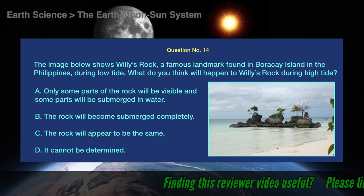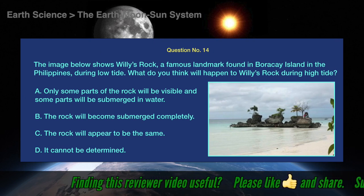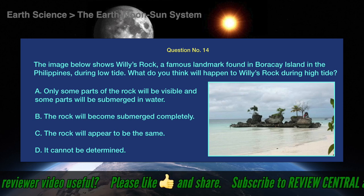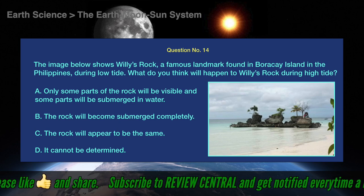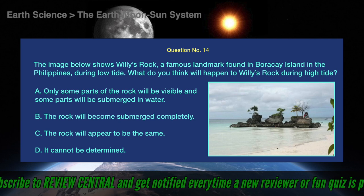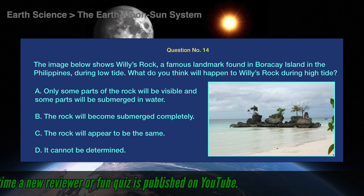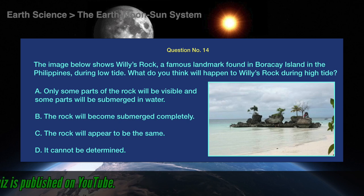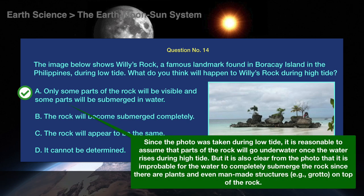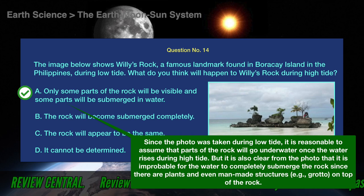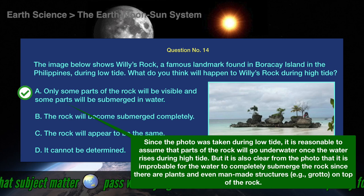Question number 14. The image below shows Willey's Rock, a famous landmark found in Boracay Island in the Philippines, during low tide. What do you think will happen to Willey's Rock during high tide? A. Only some parts of the rock will be visible and some parts will be submerged in water. B. The rock will appear to be the same. C. The rock will become submerged completely. D. It cannot be determined. The correct answer is A. Only some parts of the rock will be visible and some parts will be submerged in water. Since the photo was taken during low tide, it is reasonable to assume parts of the rock will go underwater when the water rises. However, it is improbable for the water to completely submerge the rock, since there are plants and even man-made structures such as a grotto on top of the rock.